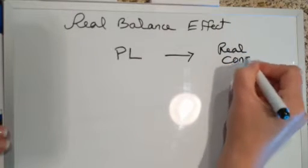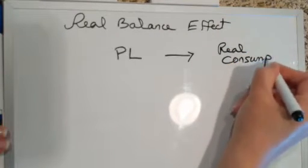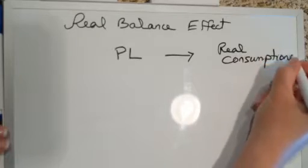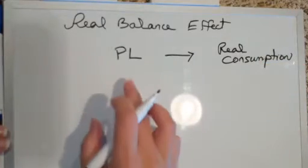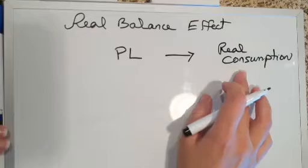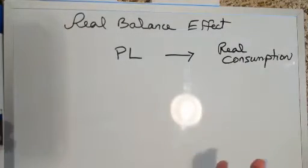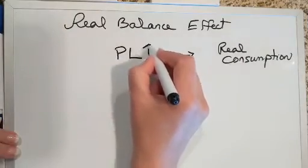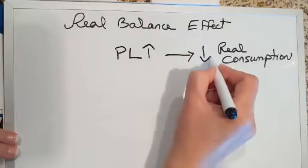Because when you look at the actual definition of the real balance effect, it tells you that there's an inverse relationship between the price level and real consumption and consequently the real GDP itself. So if the price level rises, then real consumption is going to shrink.